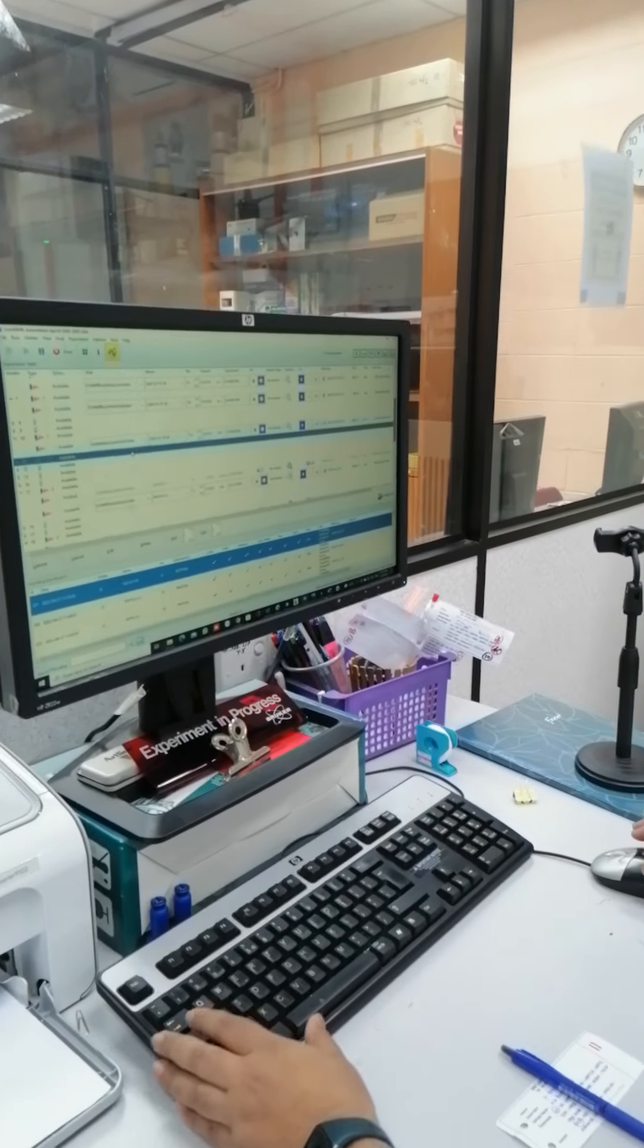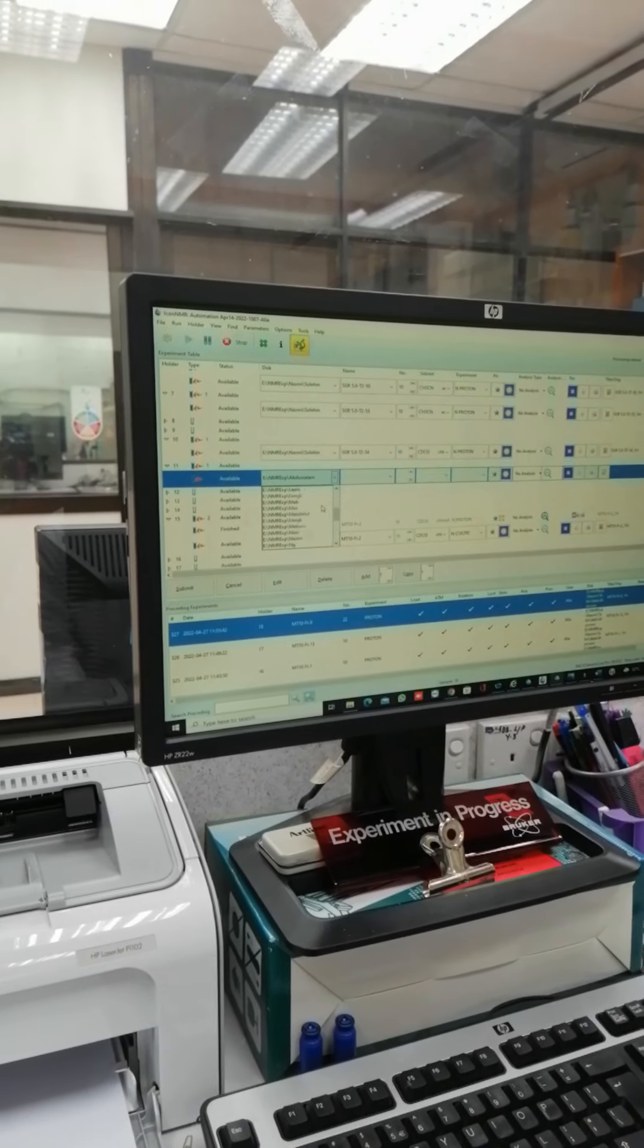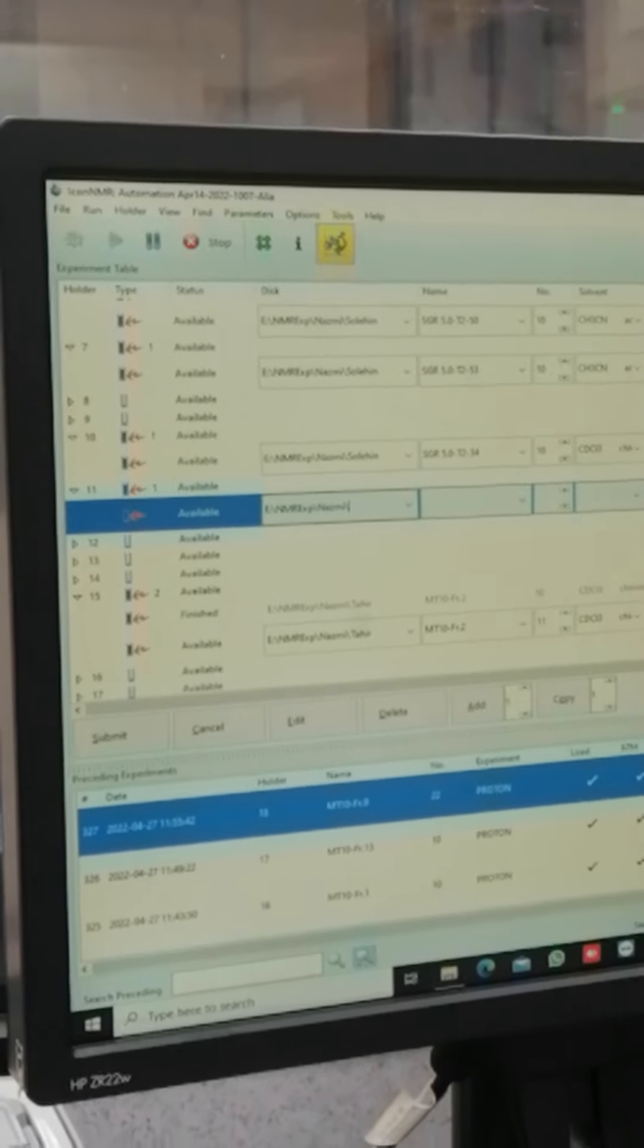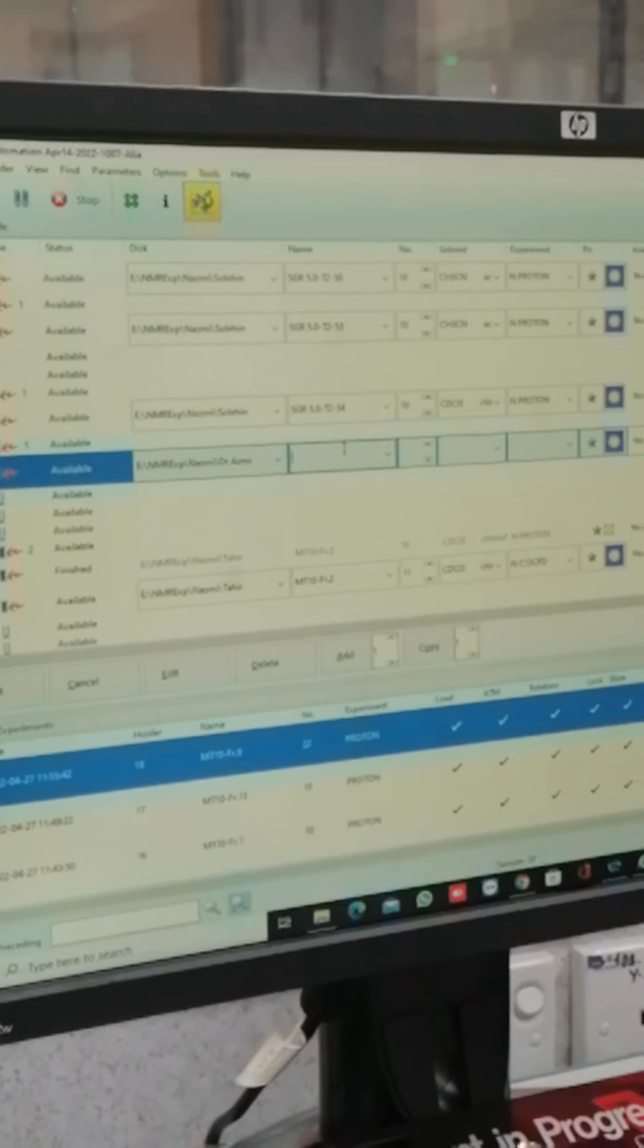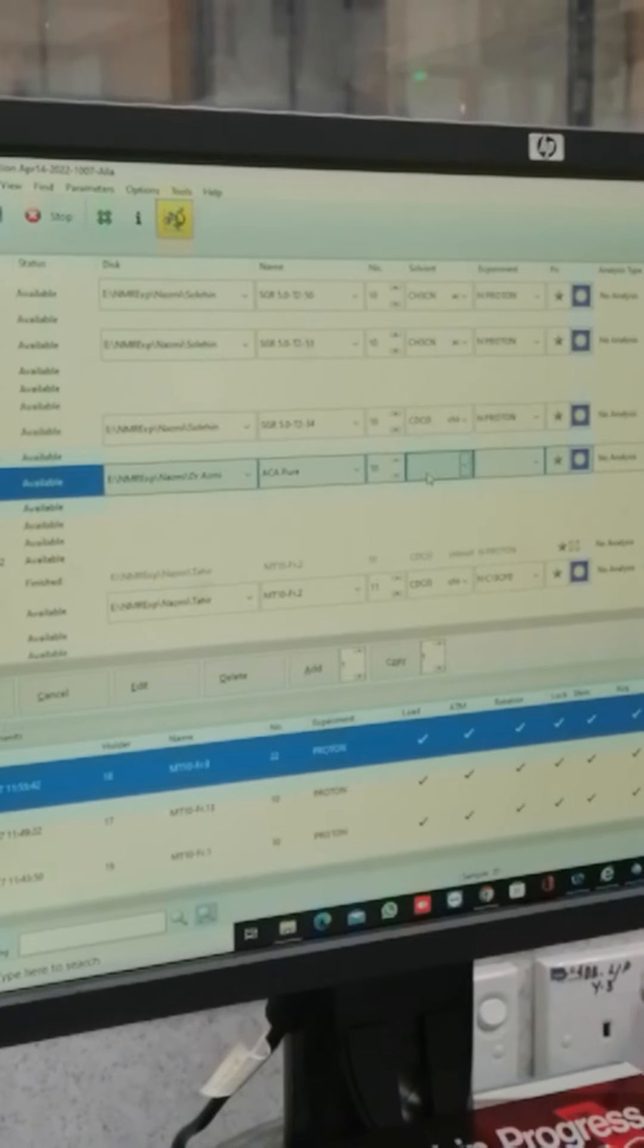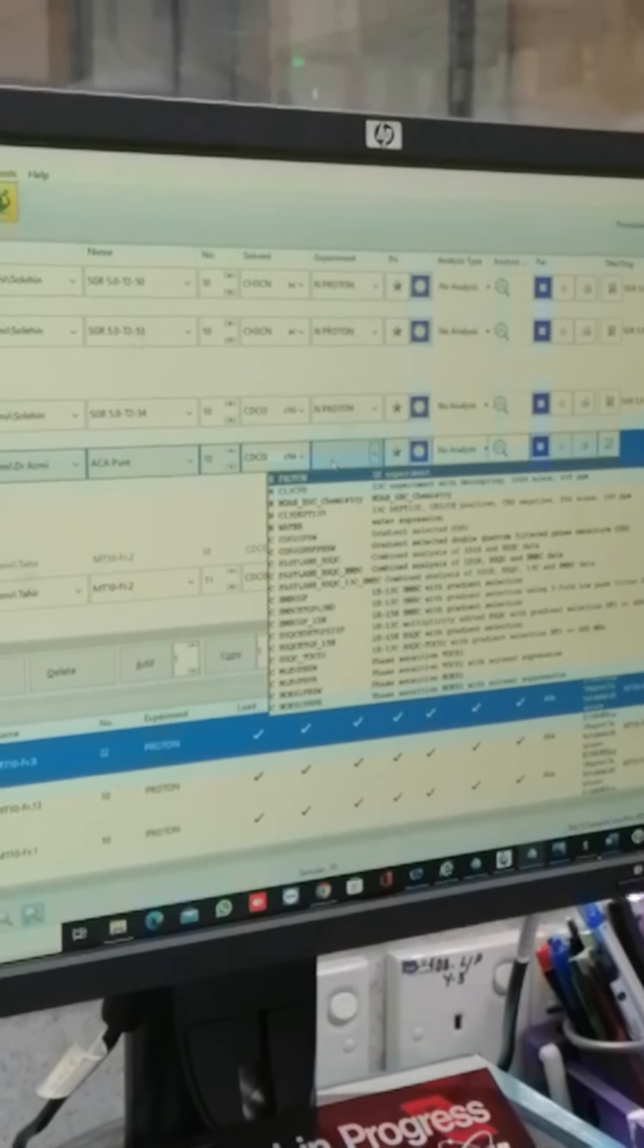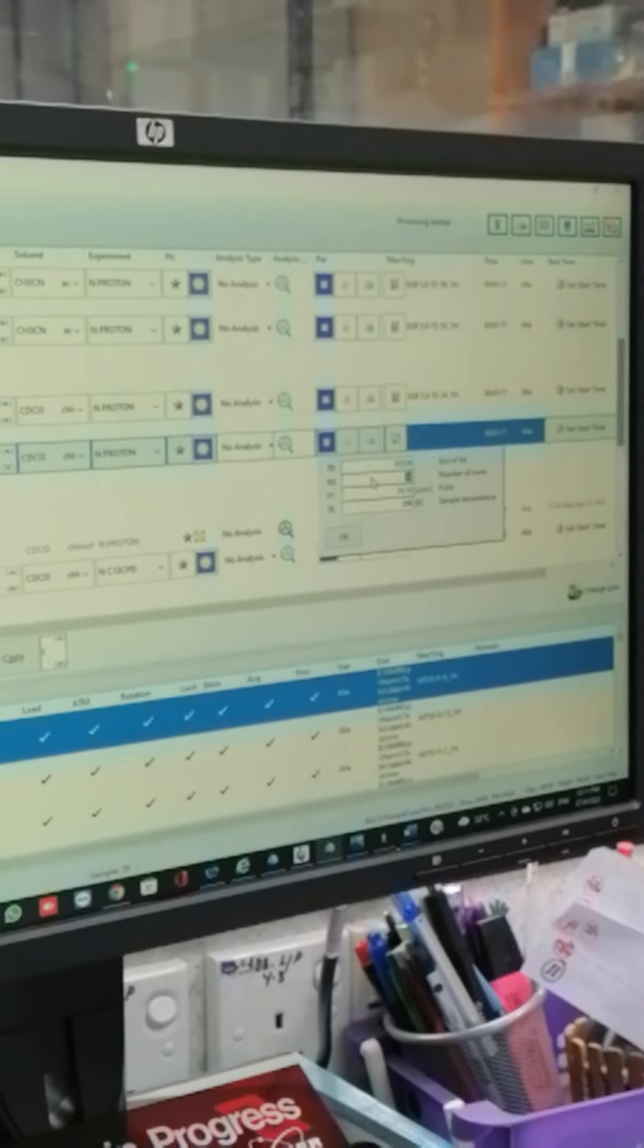We key in our sample profile in this Topspin software. Key in your respective folder, key in your sample ID. Select the solvent that you use. In this case, we are using chloroform D. Select the experiment that we want to proceed. We proceed with proton NMR.